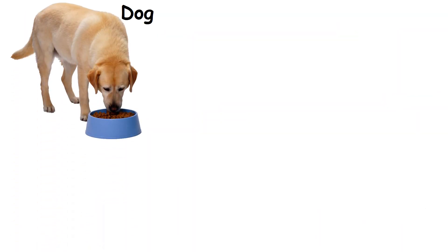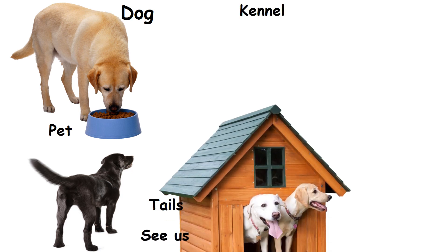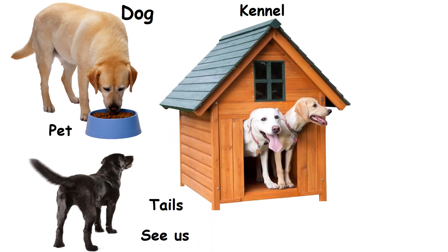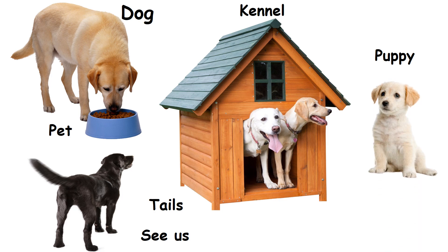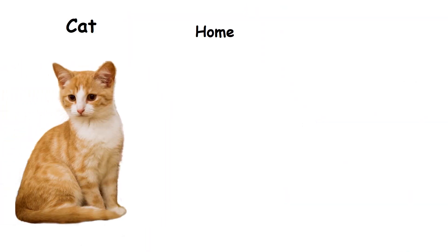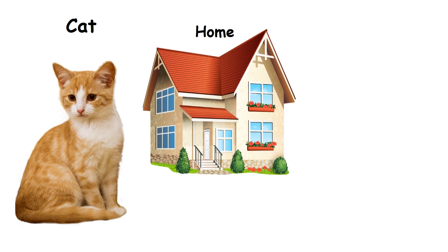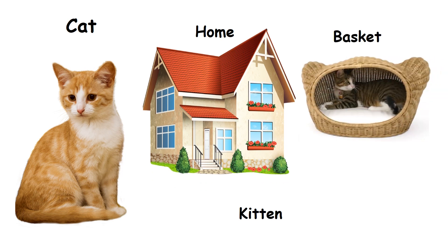Dog: It is a pet animal. They wag their tails when they see us. We keep them in a kennel in our house. Its young one is a puppy. Cat: They live in our home. They stay mostly in a basket. Their young one is a kitten.